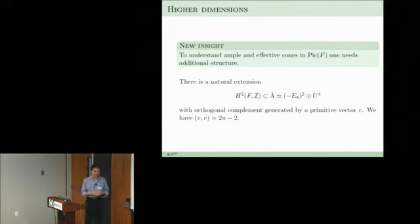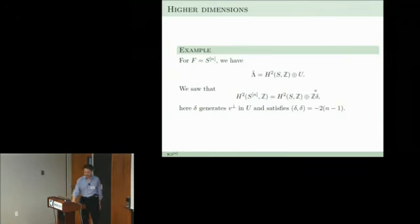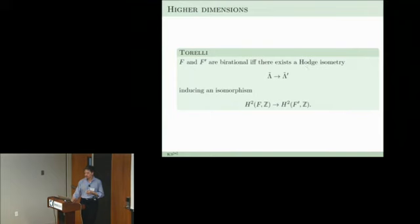The new insight was that to understand these cones it doesn't suffice to look at the Picard lattice by itself. One has to look at a slightly bigger lattice — there is a natural extension with some extra primitive vector class v. In the example of Hilb^n(S) you originally see H^2(S) plus Z·delta; for the correct description you actually need one additional class v. That is the lattice you need to analyze, and the conjecture is stated in terms of this extended lattice.